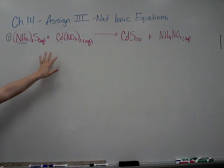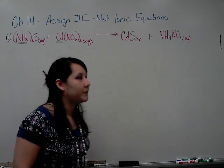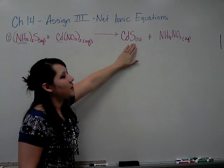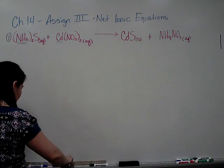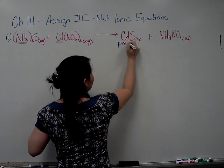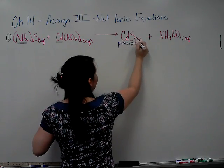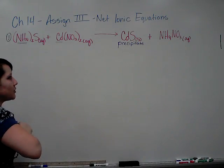So we predicted the products first, then we labeled them as soluble or insoluble. The fact that we ended up with a solid as a product means that this reaction has a precipitate and cadmium sulfide is the precipitate. Cadmium sulfide will be labeled as the precipitate.